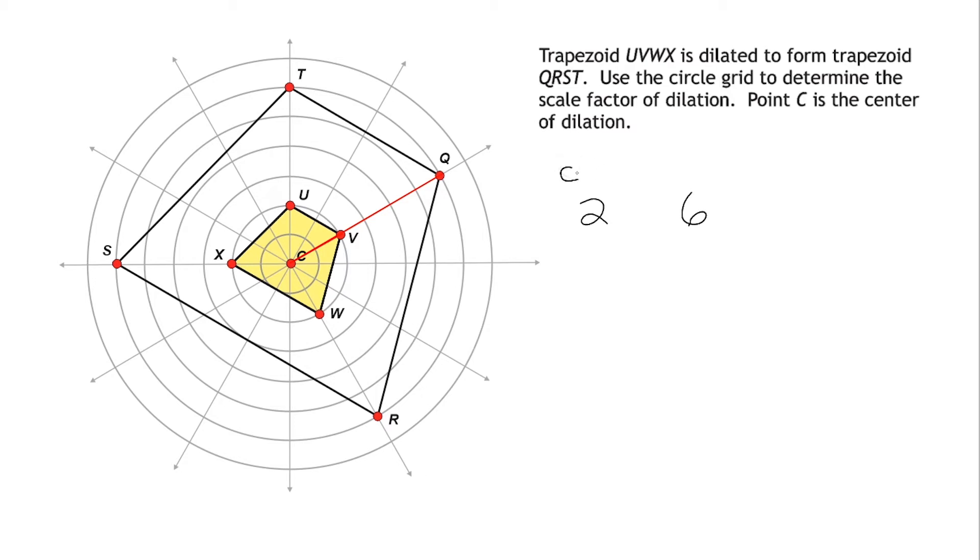So line segment CV is a distance of 2, and line segment CQ is a distance of 6. Now, here's how you determine what the scale factor is. Because we were scaling this smaller trapezoid up and making it larger, that means our scale factor must be greater than 1. Anytime you are scaling something up, your scale factor is going to be greater than 1. So all you do is you take these two distances here, and you write them on either side of your fraction bar, so you get a value that would be greater than 1. So we would have to put 6 on the top, and we would have to put 2 on the bottom. And we can simplify 6 over 2 to be 3, which is the scale factor of our dilation.